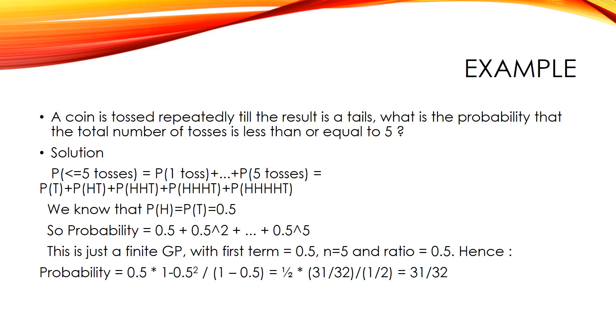Let us look at an example. A coin is tossed repeatedly till the result is a tails. What is the probability that the total number of tosses is less than or equal to 5? So, P of less than or equal to 5 tosses equals P of 1 toss plus P of 5 tosses equals P of T plus P of HT plus P of HHT plus P of HHHT plus P of HHHHT.